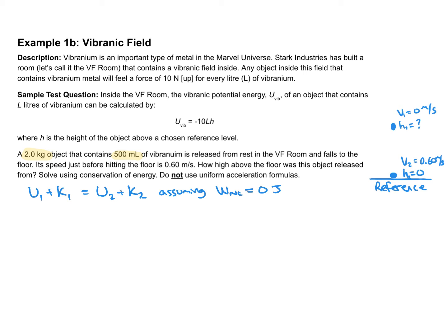However, with this make-believe field, we've ended up with a make-believe potential energy. They provide the formula for the vibranic potential energy. So the potential energy needs to be split into two kinds: gravitational and vibranic. I'll split the potentials into gravitational and vibranic on both sides.